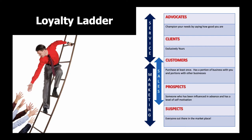The next concept is the loyalty ladder. At the bottom are suspects — everyone out there in the marketplace. Prospects are people who've been influenced and have some level of motivation — maybe they've spoken to us, visited our website, or given us a call. A customer is someone who's purchased at least once and gives a proportion of their business to you. A client is someone who's virtually exclusively yours and buys from you repeatedly. Advocates are clients who champion your business by telling others how good you are.